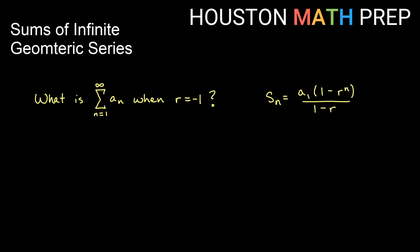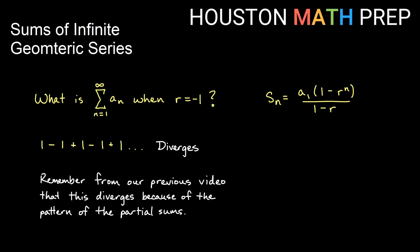If r is exactly negative 1, the bottom of the formula is not 0, but what happens is you multiply by negative 1 repeatedly, getting alternating signs with the same values. From our previous video, the partial sums just kept jumping between 1 and 0 — the pattern of partial sums oscillates back and forth between two values. So we say this diverges because the partial sums jump around, not because they add to infinity.